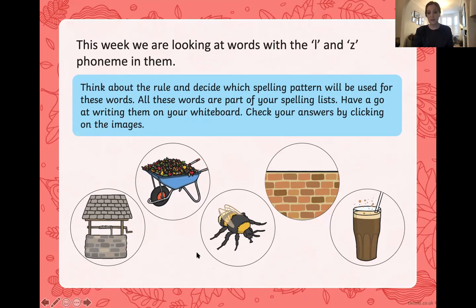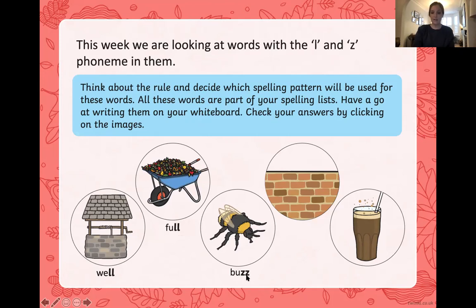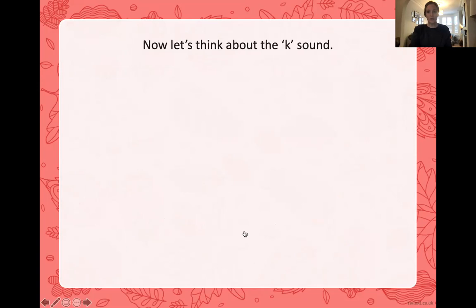Pause the screen and have a go at writing those, then we'll see how you did. So we have 'well' — after the vowel E, we spell it with a double L, a digraph L. 'Full' — after the vowel U, again a digraph L. 'Buzz' — following a U which is a vowel, we have a digraph Z. 'Wall' — following A which is a vowel, we have a digraph L. 'Fizz' — following I which is a vowel, we have a digraph Z. So after a vowel sound A, E, I, O, or U, we spell L or Z with a digraph. Well done!